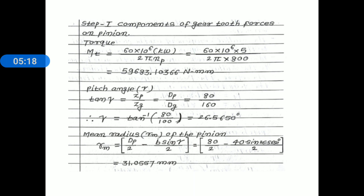Next, calculate the mean radius R sub m of the pinion. The relation is: R sub m equals (D sub xp divided by 2) minus (b times sin gamma divided by 2). Substituting values: 80 divided by 2, minus 40 times sin 26.5650 degrees divided by 2. After simplification, mean radius R sub m equals 31.0557 millimeters.